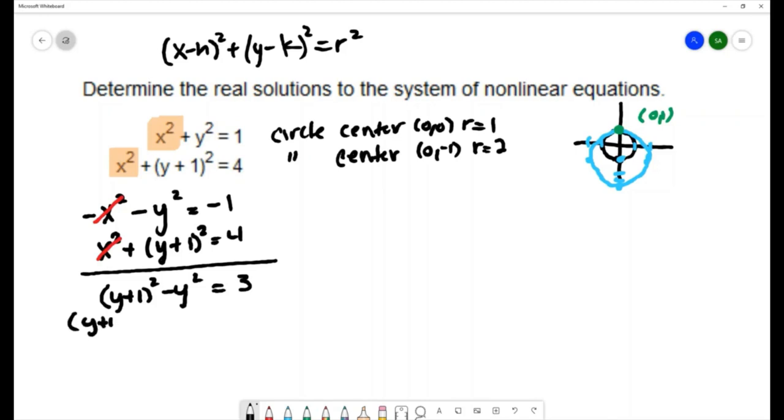This y plus one times y plus one minus y squared equals three. If I multiply that out, I'll have y squared plus y plus y plus one minus y squared equals three. The y squareds cancel each other out. The y's combined to be like terms: two y plus one equals three. I'll subtract one on both sides.